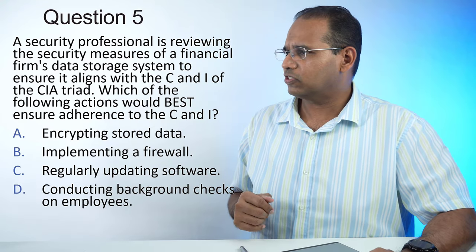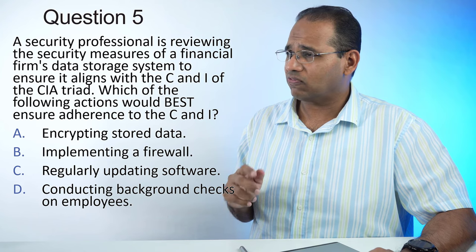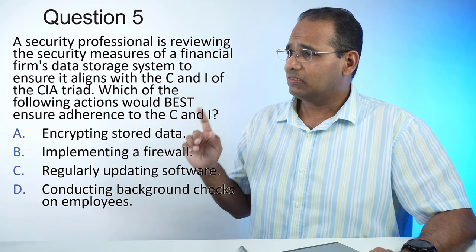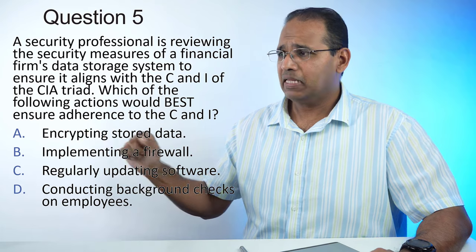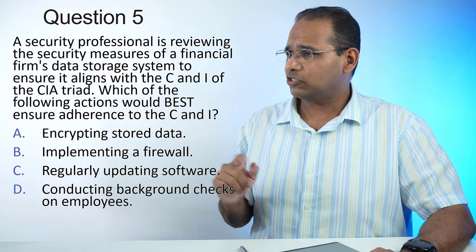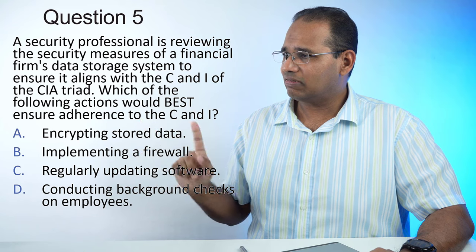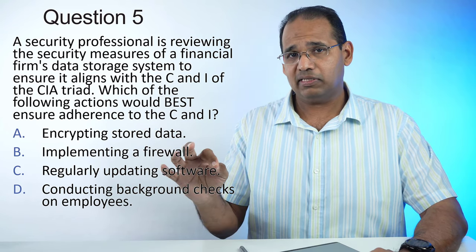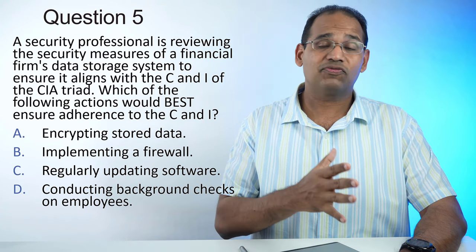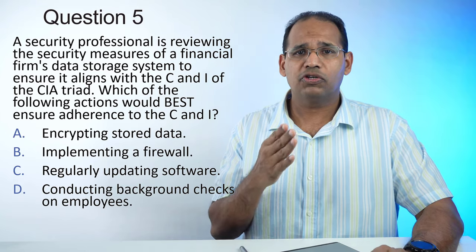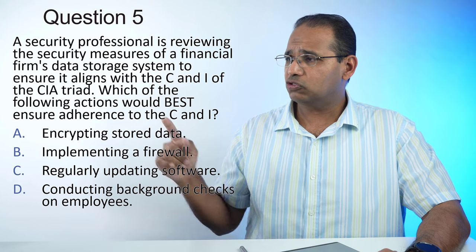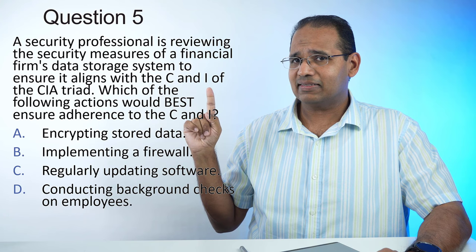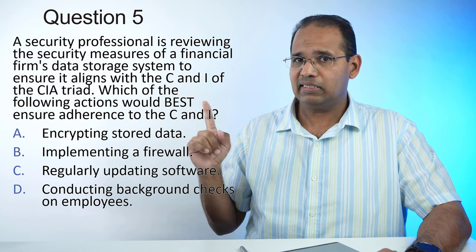Practice question number 5: A security professional is reviewing the security measures of a financial firm's data storage system to ensure it aligns with the C and I of the CIA triad. Which of the following actions would best ensure adherence to C and I? CIA stands for confidentiality, integrity, and availability. They're asking about confidentiality and integrity — no availability here. The choices include encrypting stored data, implementing a firewall, regularly updating software, and conducting background checks.